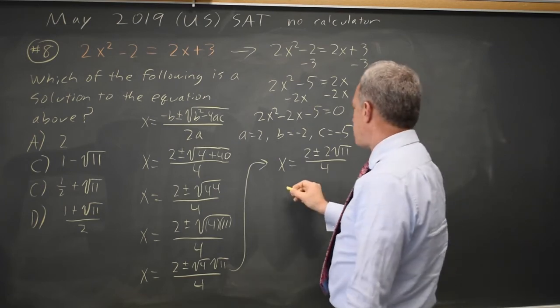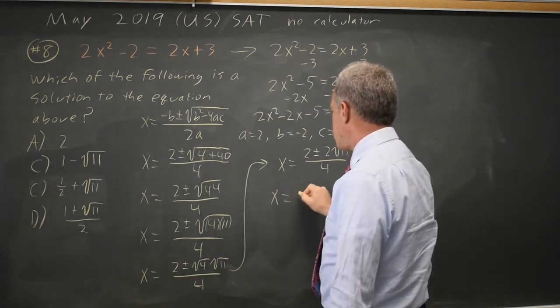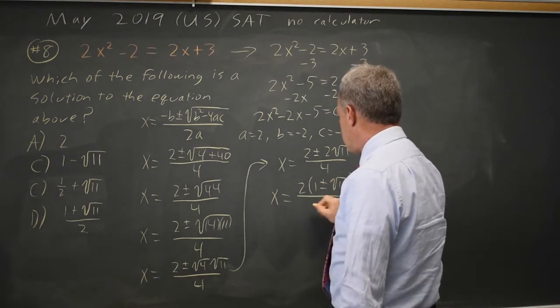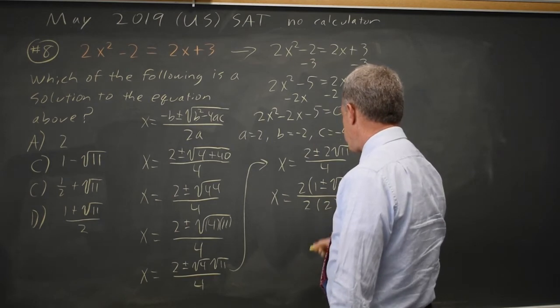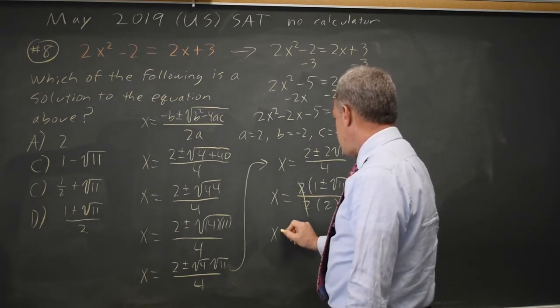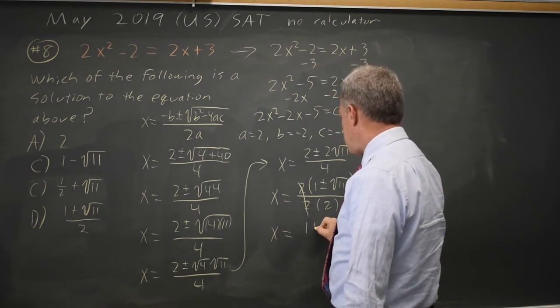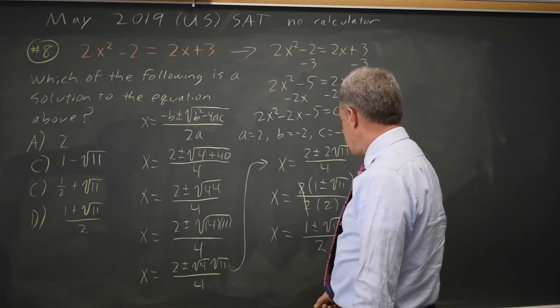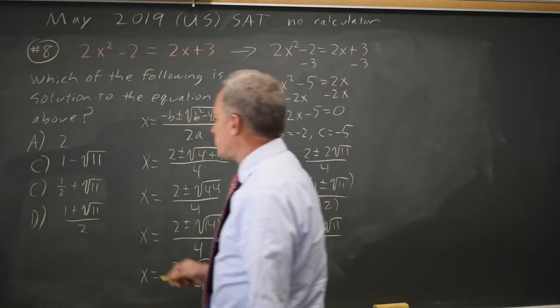Factoring out the common factor of 2 in the numerator, x equals twice 1 plus or minus root 11 over 2 times 2. 2 over 2 is 1. So that simplifies to x equals 1 plus or minus root 11 over 2. And with the plus sign, that is choice D.